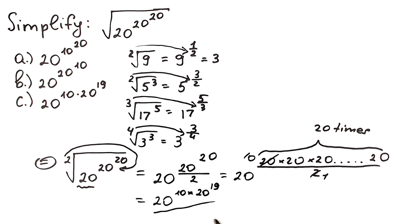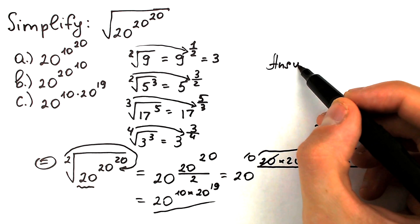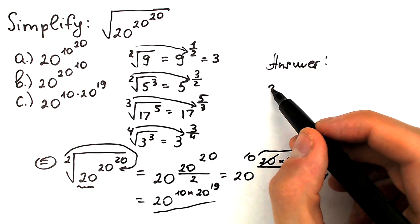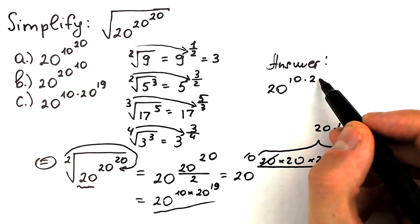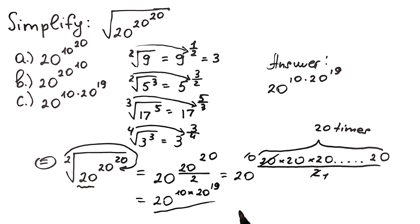Brilliant and tricky challenge! A lot of students get confused on the exam about this question. I hope you chose the correct answer. Our final answer is 20 to the power 10 times 20 to the power 19. If you still have any questions, write them in the comment section. Don't feel bad if you got this wrong!